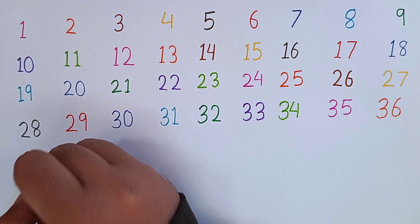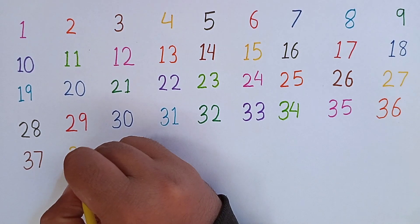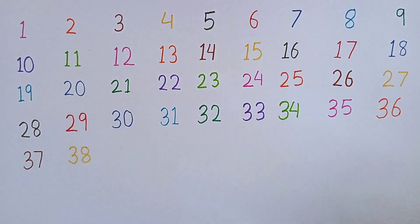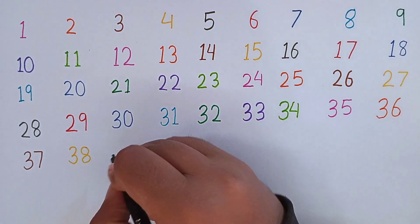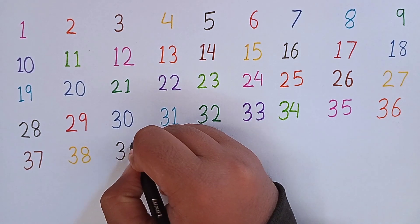After 36, the next number will be 37. This is 37. 3, 7 — 37. After 37, the next number will be 38. 3, 8 — 38. After 38, I will write 39. 3, 9 — 39. 37, 38, 39, 40.